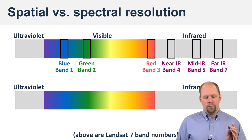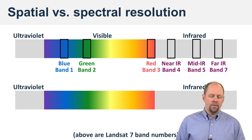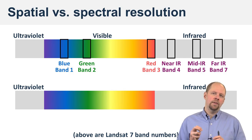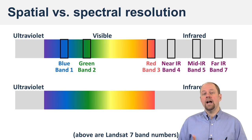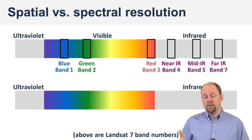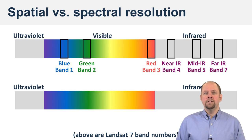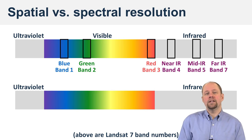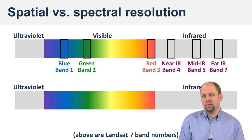So here we have the blue band, green band, red band, and so on. The spectral resolution, or the definition of spectral resolution, is the number and size of the wavelengths, intervals, or bands that are used by a sensor, or what it's sensitive to. So if it has more bands, it has a higher spectral resolution; if it has fewer bands, it has a lower spectral resolution.